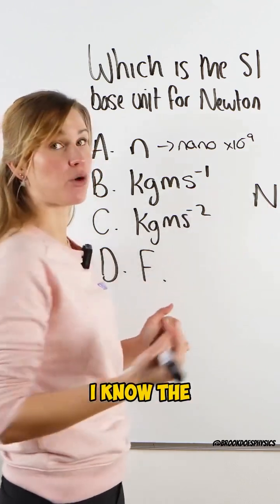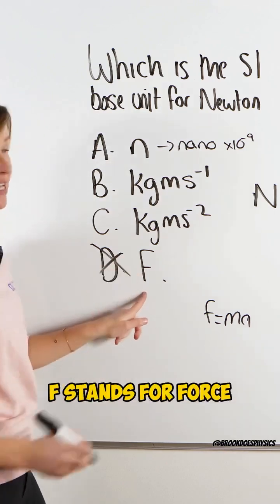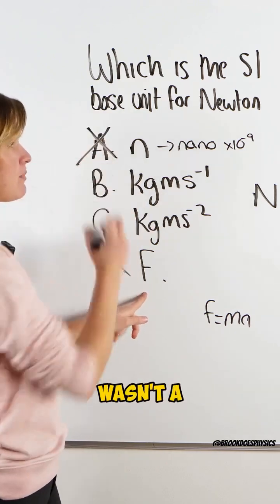So Newtons, I know the equation to calculate easily is F equals MA. So again we know it's not D because F stands for force. We know it wasn't A because N is nano.